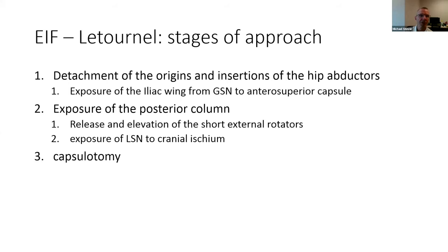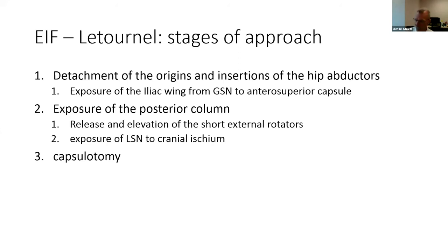Letronel described the stages of the approach as: first, detachment of the origins and insertions of the hip abductors, giving exposure to the iliac wing from the greater sciatic notch to the anterior superior capsule. Second, exposing the posterior column in a Kocher-Langenbeck fashion, with release and elevation of the short external rotators and exposure of the lesser sciatic notch down to the cranial ischium. Third, performing the capsulotomy.